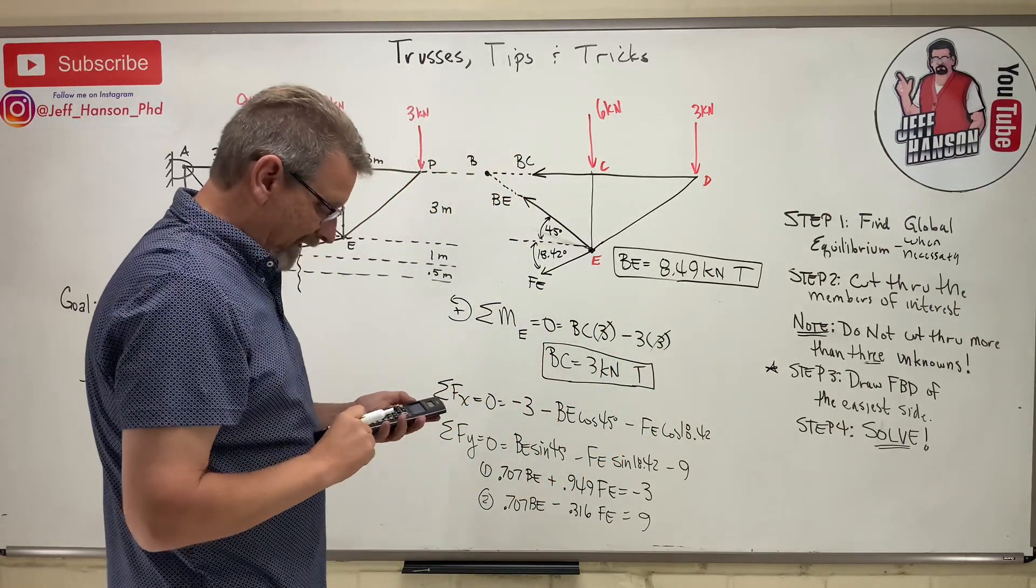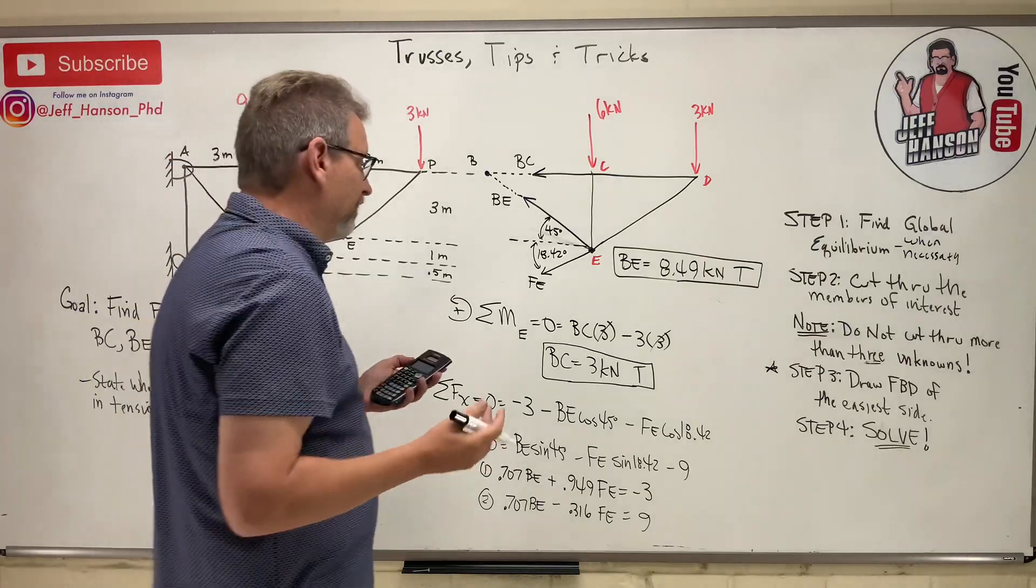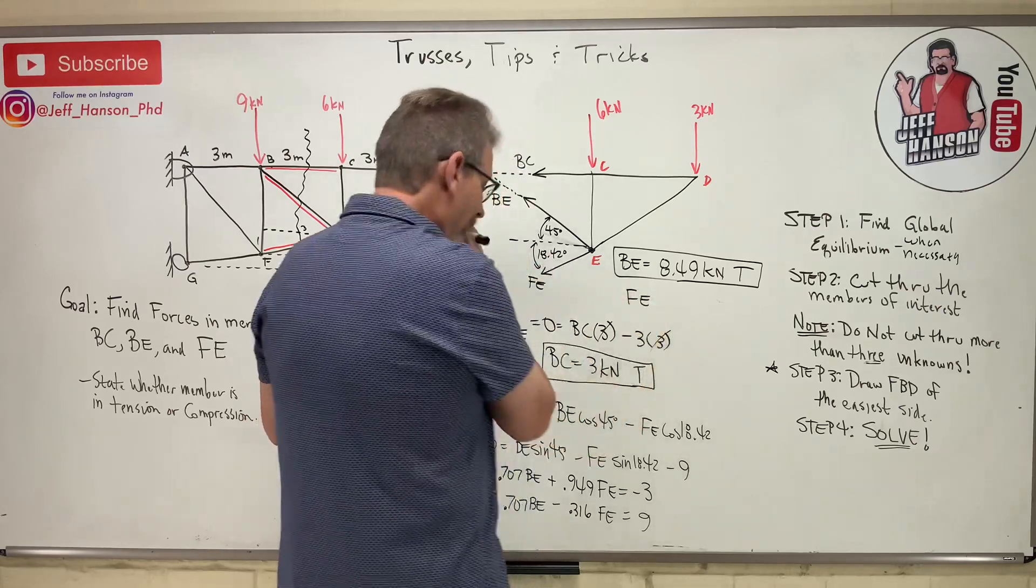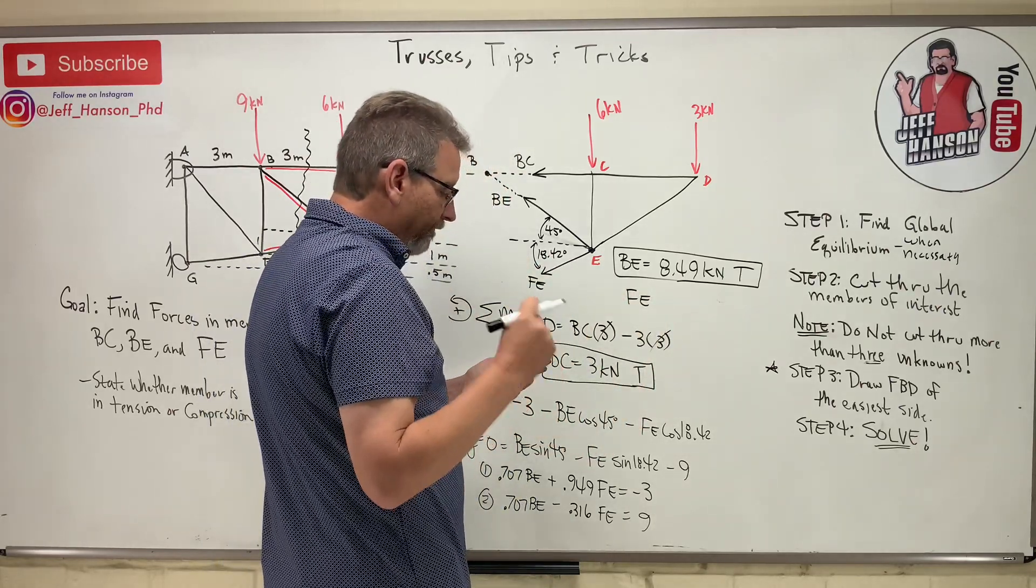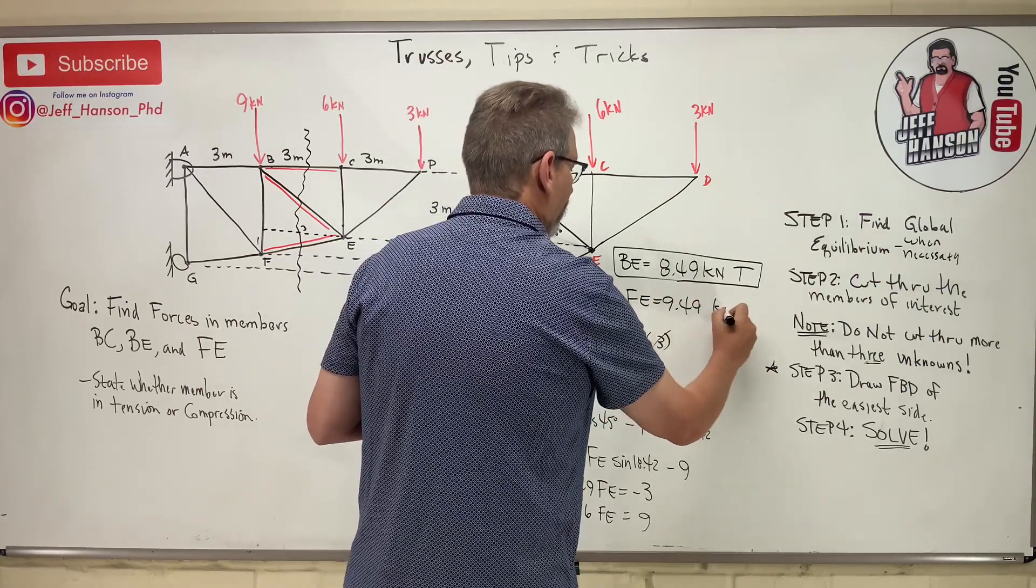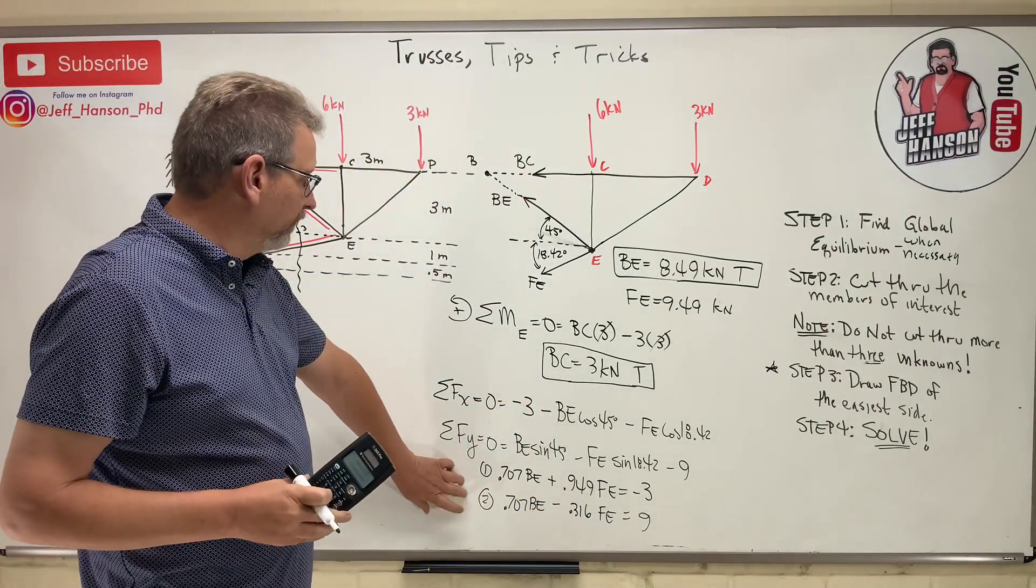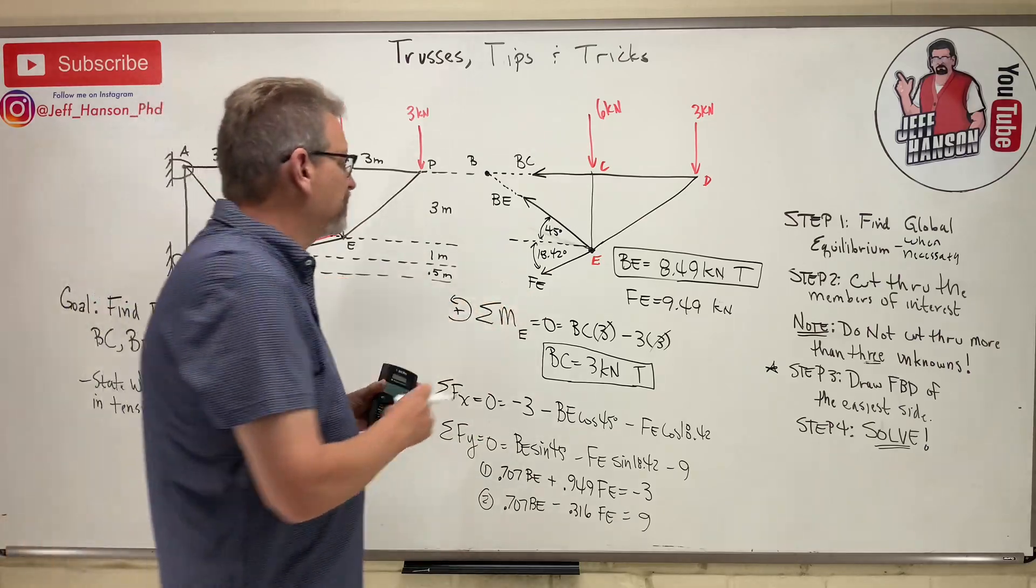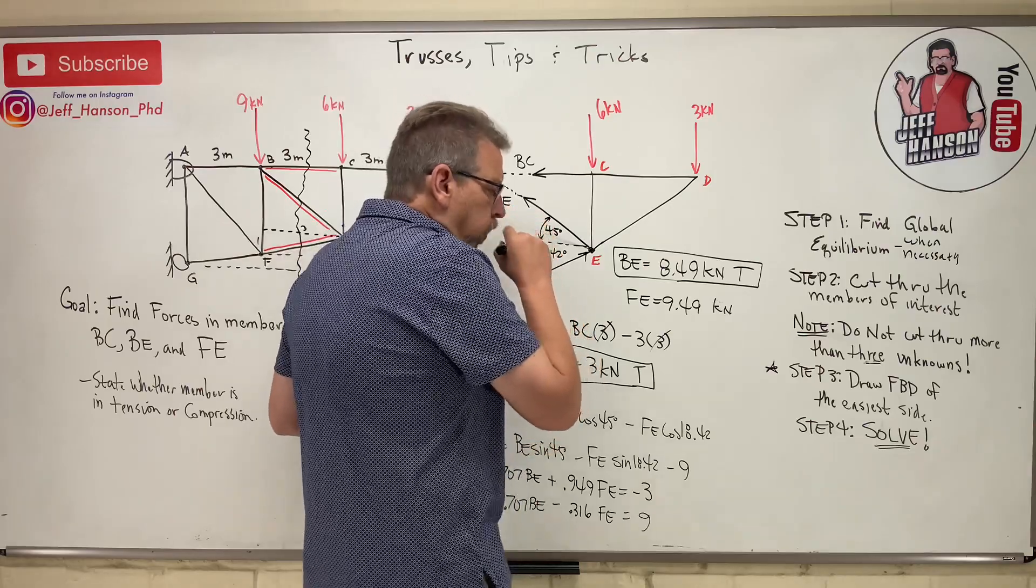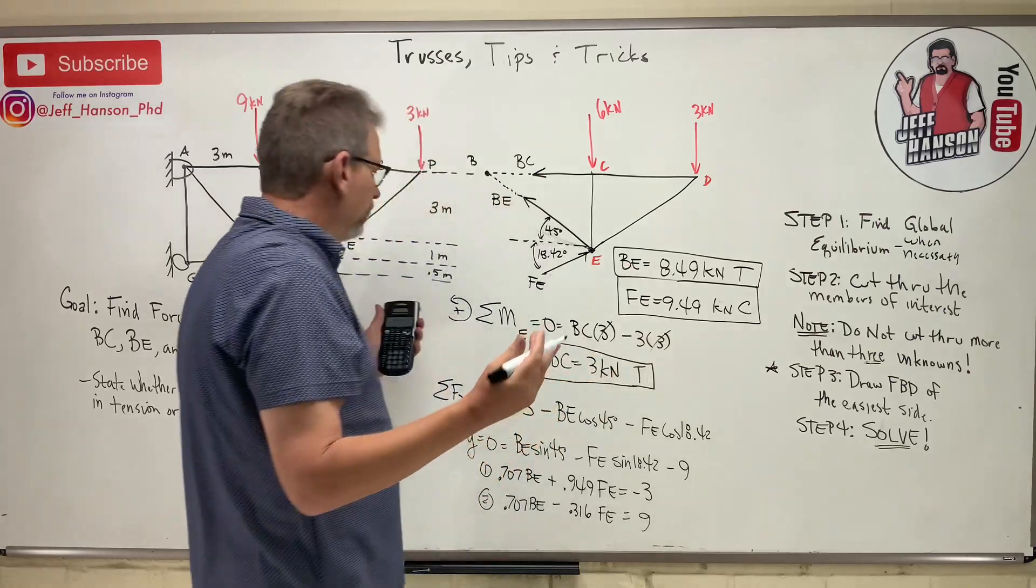And then the Y. I got a negative for the Y. I knew one of them was negative, right? So it's Y. So FE, I got 9.49. But I got negative 9.49 right from when I solved these equations. So that means that I assumed FE in tension. Well, he's really in compression. Excuse me. So there'll be a C there. And done.